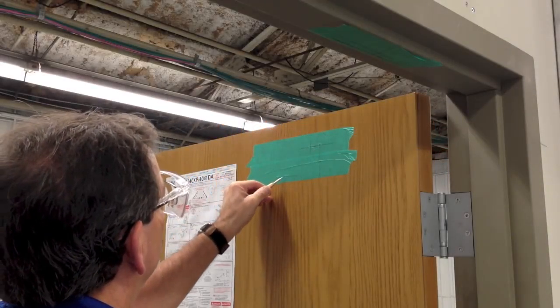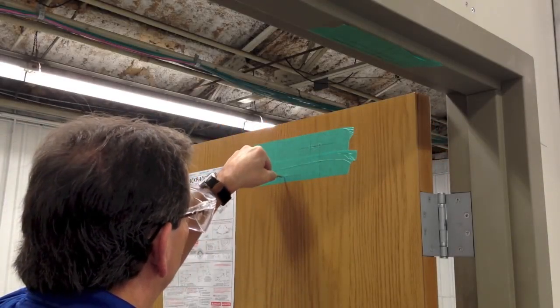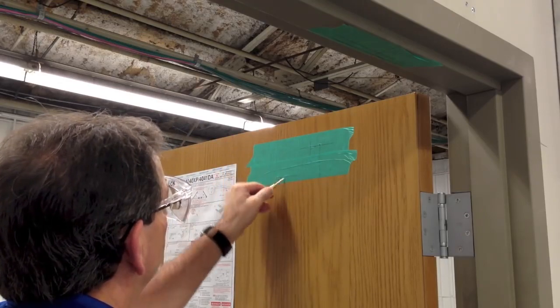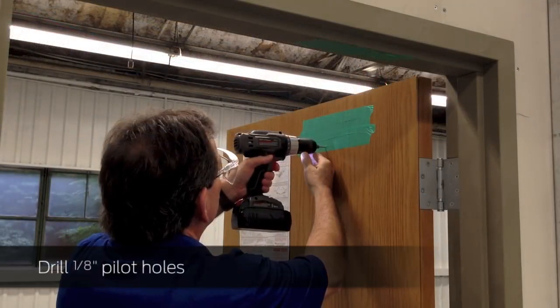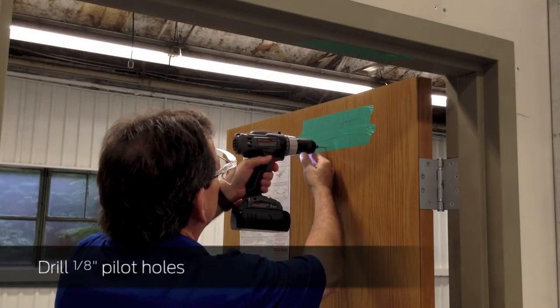Using the center punch, mark the nine locations to be drilled on the door and frame. Drill one-eighth inch pilot holes at all locations.